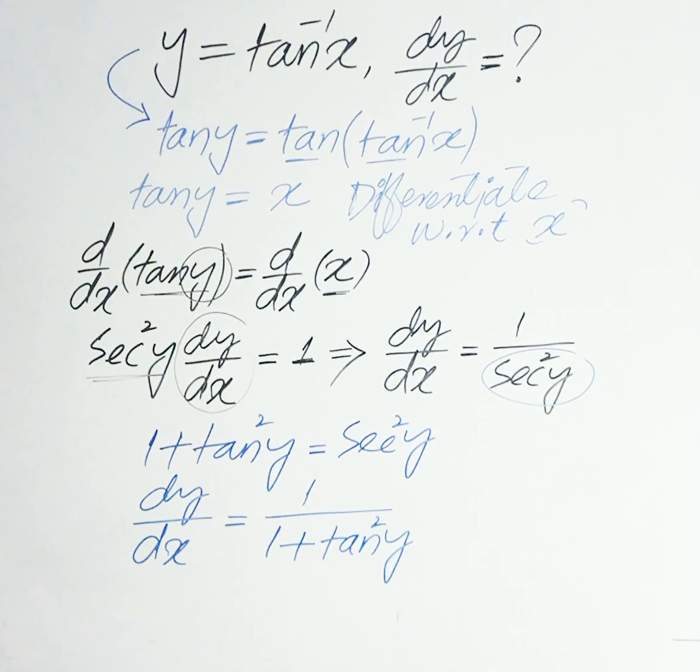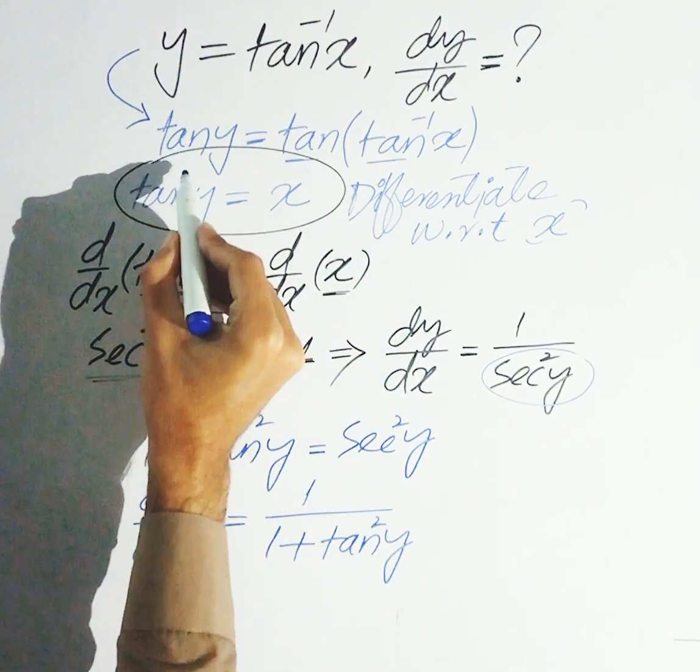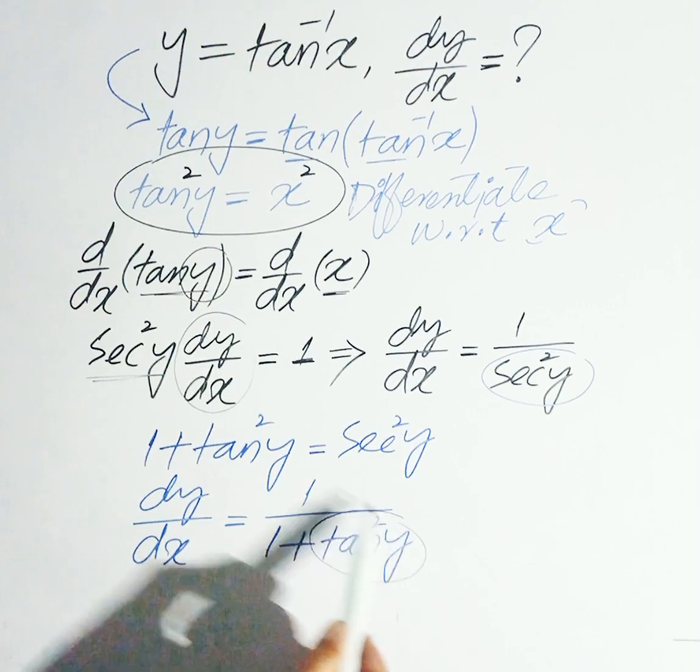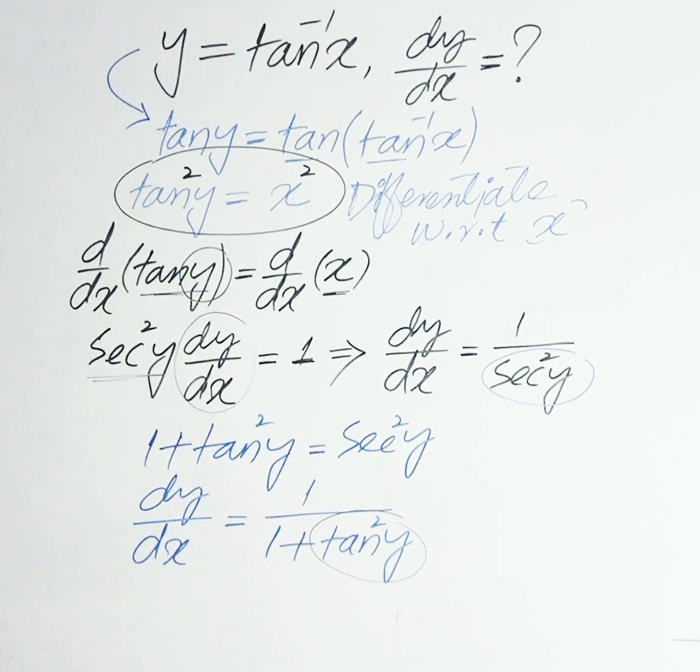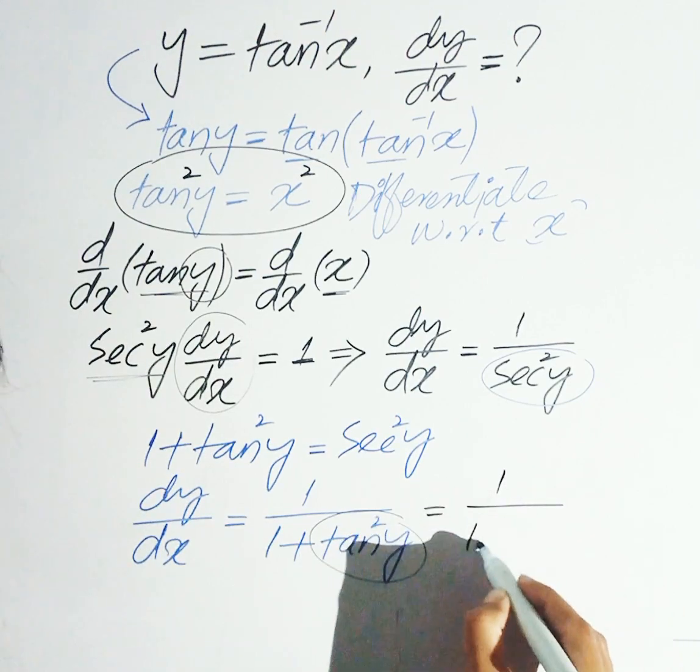Earlier we said that tangent y is equal to x, so if we square both sides, tangent squared y equals x squared. So replace tangent squared y with x squared.